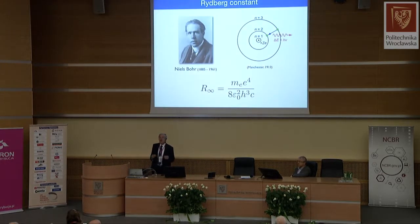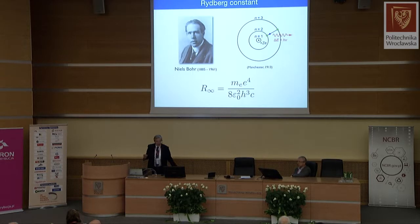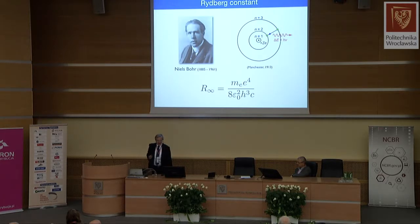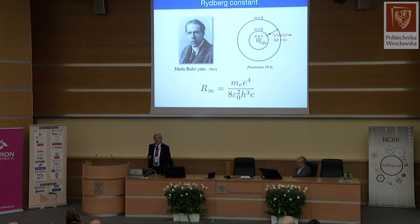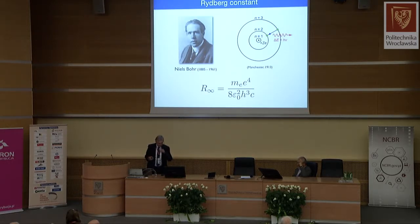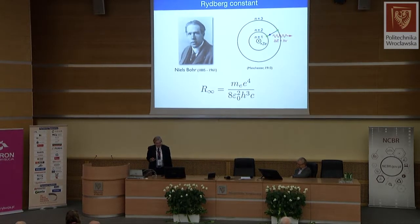Later, after Rutherford had discovered the nucleus of atoms, Niels Bohr came up with his planetary atom model, assuming in a drastic non-classical way that the electron orbiting the proton nucleus would only be allowed into special stable orbits, and that radiation is emitted or absorbed in jumps between these energy levels. This model had many shortcomings, but it allowed Bohr to express the Rydberg constant in terms of the electron mass, the electron charge, Planck's constant, and the speed of light — in very good agreement with the measured value. People felt there must be something to this radical, non-classical approach to atomic physics.